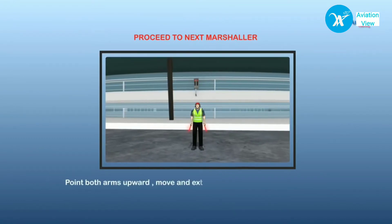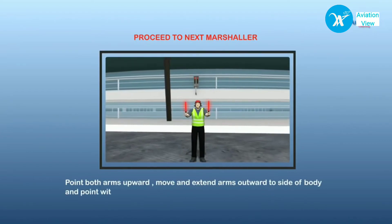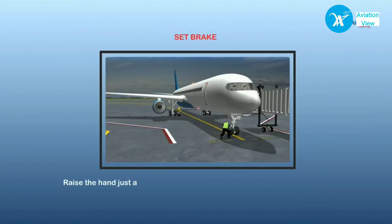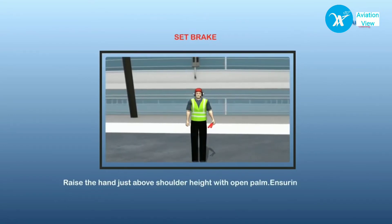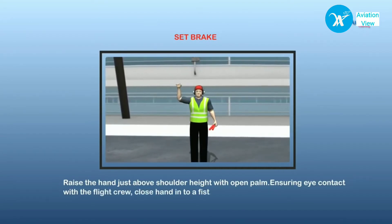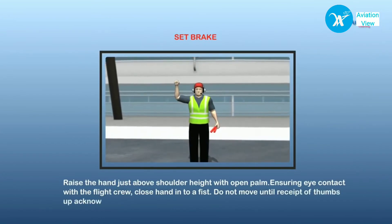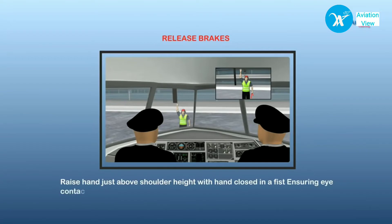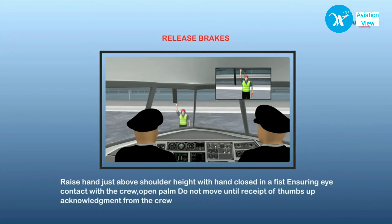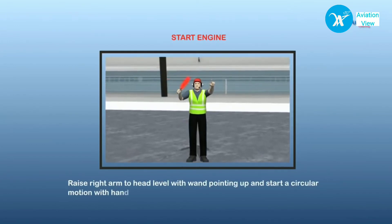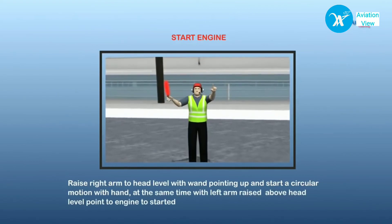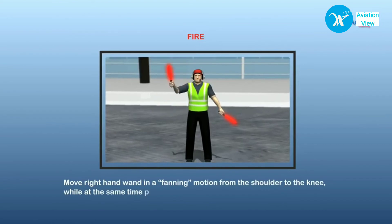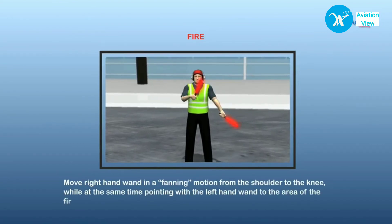When the aircraft moves out of the marshaller's area of operation, he passes the aircraft to the next marshaller by pointing both arms and wands up and outwards in that direction. To signal the pilot to set brakes, the marshaller holds a hand just above shoulder height and closes it in a fist until the pilot acknowledges. To release brakes, the marshaller ensures eye contact with the captain and releases the closed fist. To signal engine start, he raises his right arm with the wand pointing up. If a fire is spotted, he continuously moves his right hand in a fanning motion from shoulder to knee while pointing the left wand at the area of the fire.